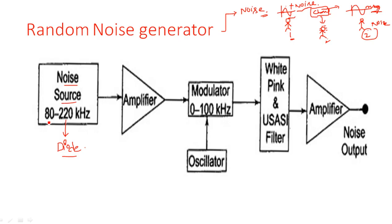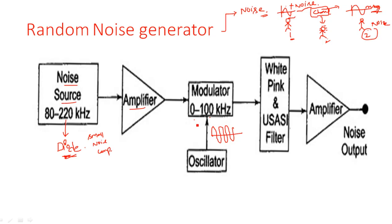The diode generates noise with a frequency range of 80 to 220 kilohertz — a moderate amount of frequency. The noise generated by the diode is very small in amplitude, so that signal is amplified by passing through an amplifier. After amplification, it is modulated with a carrier signal of very high frequency. This modulation is done with the incoming noise signal at a range of 0 to 100 kilohertz.